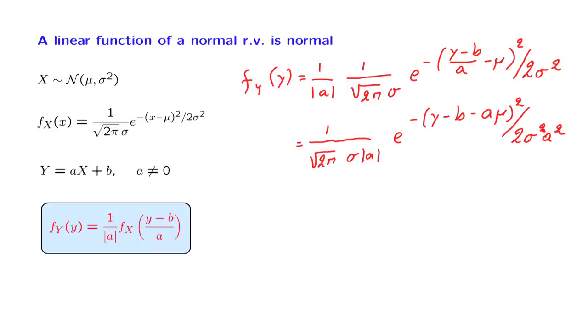We recognize that this is again a normal PDF. It's a function of y. We have a random variable y. This is the mean of the normal. And this is the variance of that normal.